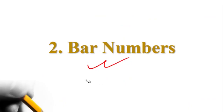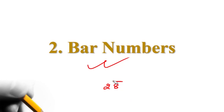So, first of all, what is bar? When you write, let us suppose 28 is the number, and when we put a dash above the digit, then this is called as bar.